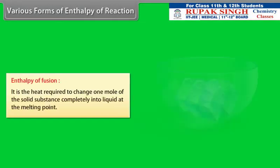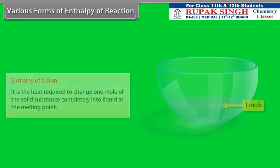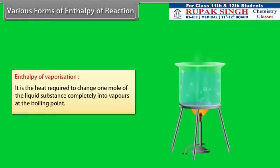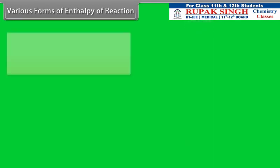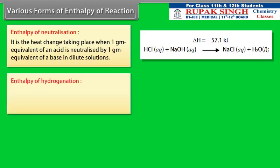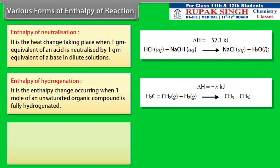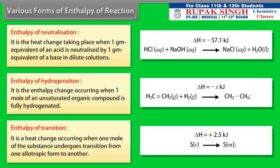Enthalpy of fusion is the heat required to change one mole of a solid substance completely into liquid at its melting point. Enthalpy of vaporization is the heat required to change one mole of a liquid substance completely into vapor at its boiling point. Enthalpy of neutralization is the heat change when one gram equivalent of an acid is neutralized by one gram equivalent of a base in dilute solution. Enthalpy of hydrogenation is the enthalpy change when one mole of an unsaturated organic compound is fully hydrogenated. Enthalpy of transition is the heat change when one mole of a substance undergoes transition from one allotropic form to another.